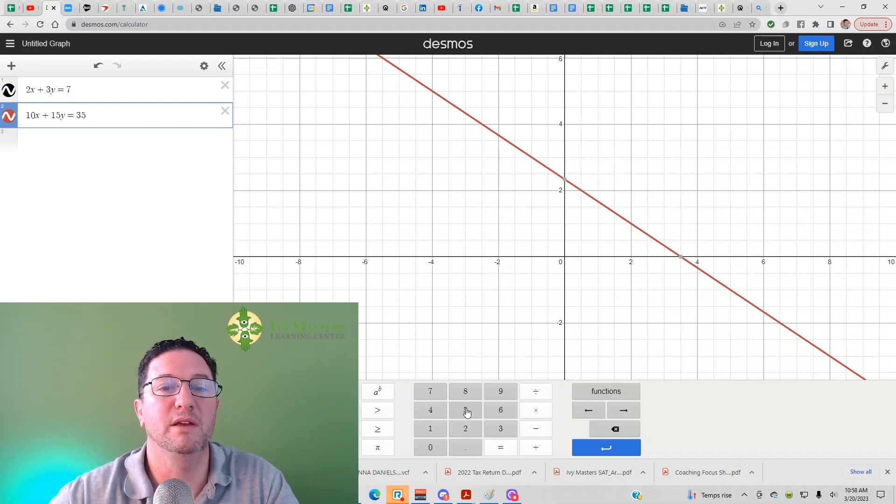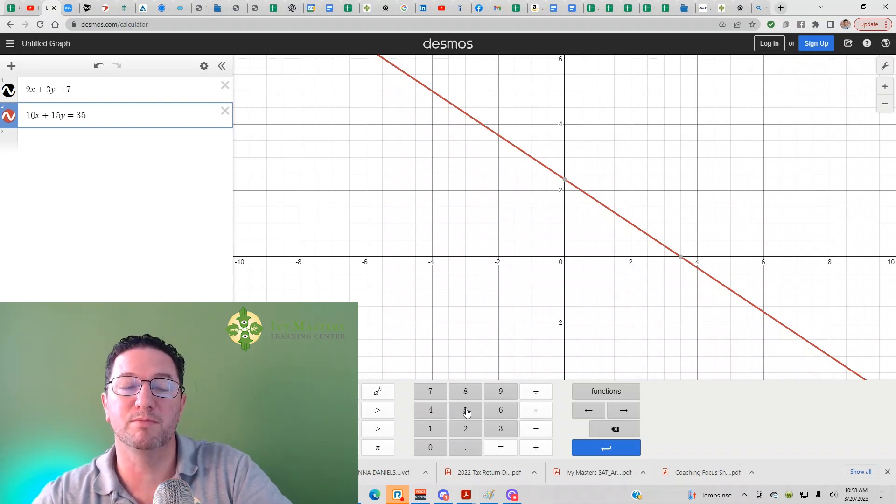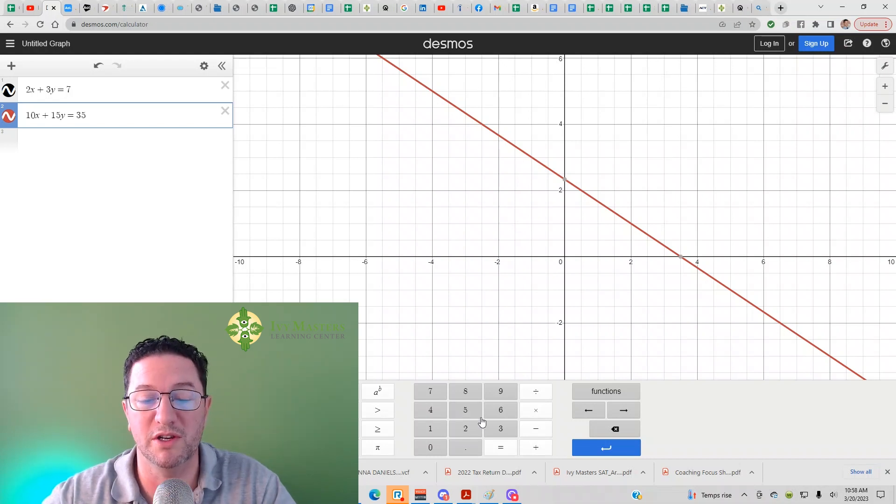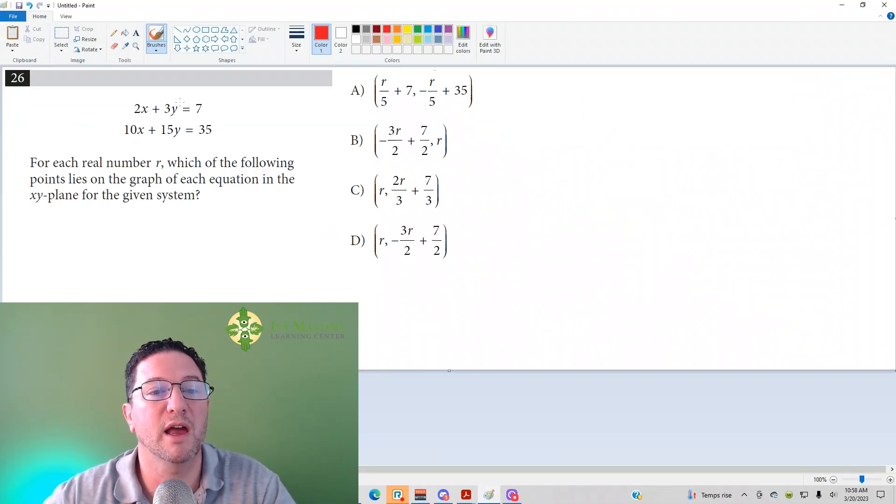So what does that mean? It looks like what we've got are infinitely many solutions, meaning the first equation and the second equation are the same equations. Let's check it out.